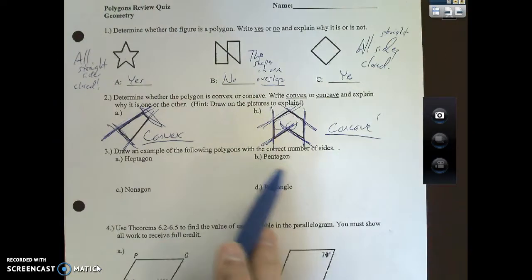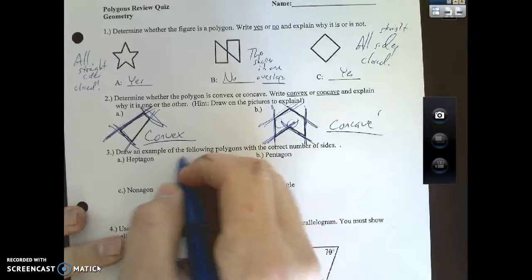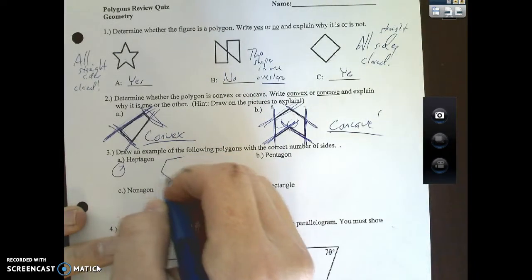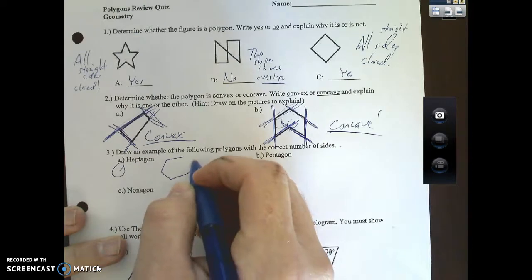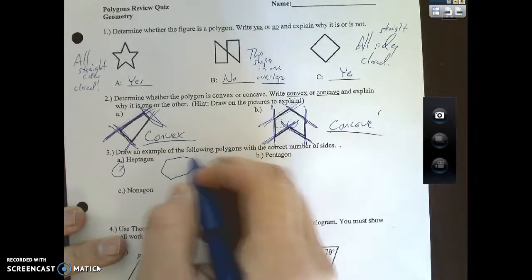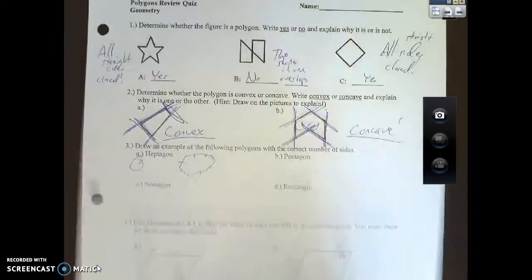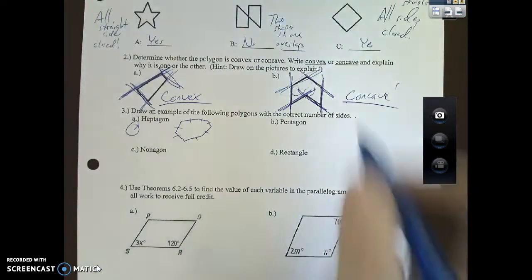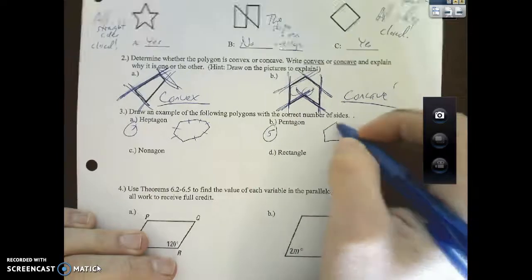Draw example of the following polygons with the correct number of sides. I don't expect you guys to be artists but I want you to try your best with this one. Heptagon is seven, so one, two, three, four, five, six, seven. And again, I'm not an artist either, but just a shape that has seven sides.